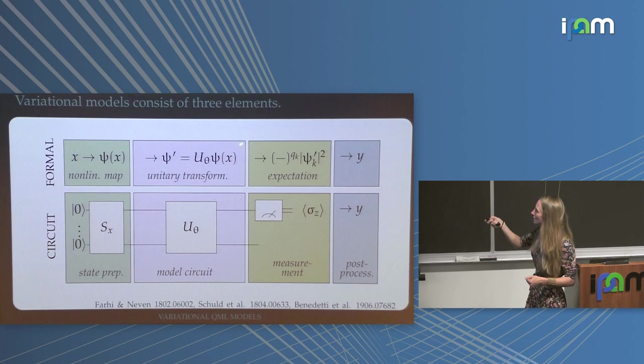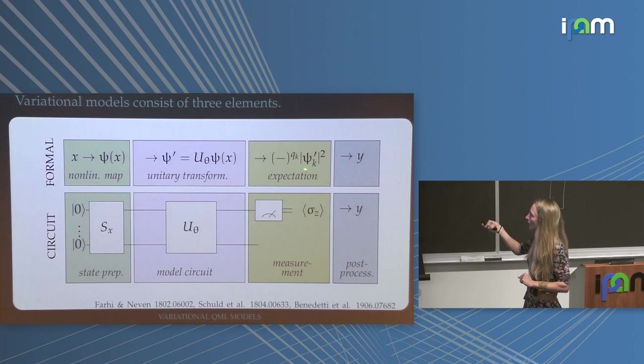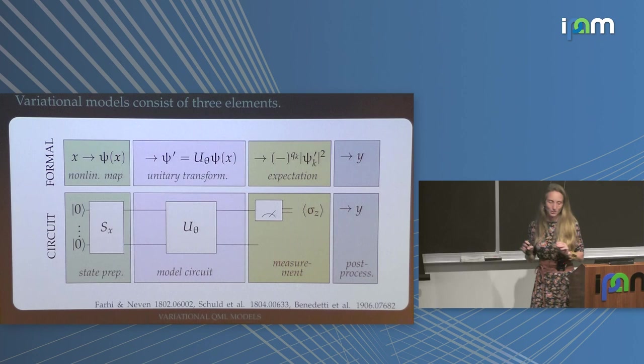Then the measurement — this quadratic form with the sigma_z operator — basically just takes these amplitudes, and if the first qubit was in zero you put a minus before, otherwise you don't. So: non-linear encoding, linear transformation, then a slight non-linearity from measurement. When I say measurement implements a slight non-linearity on top of things — this is important.